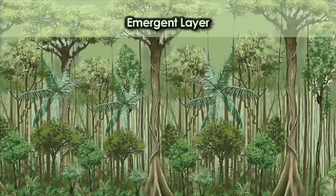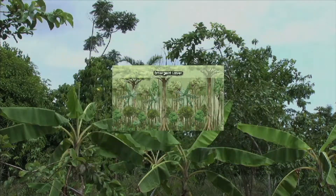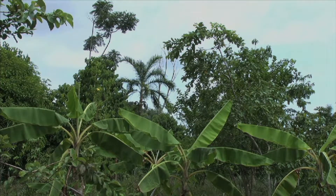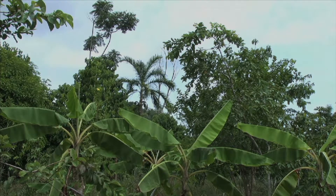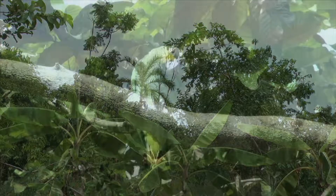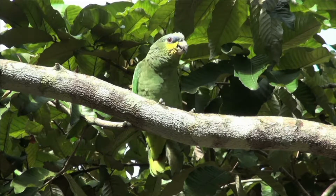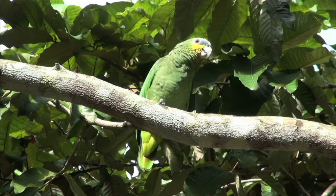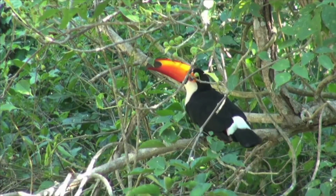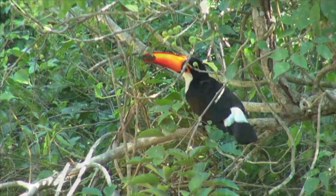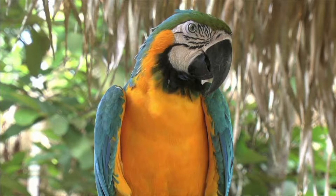The emergent layer is the farthest from the ground. It is the tops of the trees. The emergent layer is home to parrots, toucans, and hundreds of colorful birds.